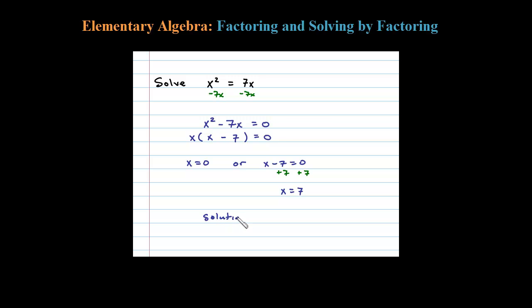So the solutions here are in set notation {0, 7}. You could see if we simply divided both sides of the original by x, x could have been 0 and we would have a problem. So certainly you want to follow the steps: set it equal to 0, factor it, then set each factor equal to 0 and solve from there.